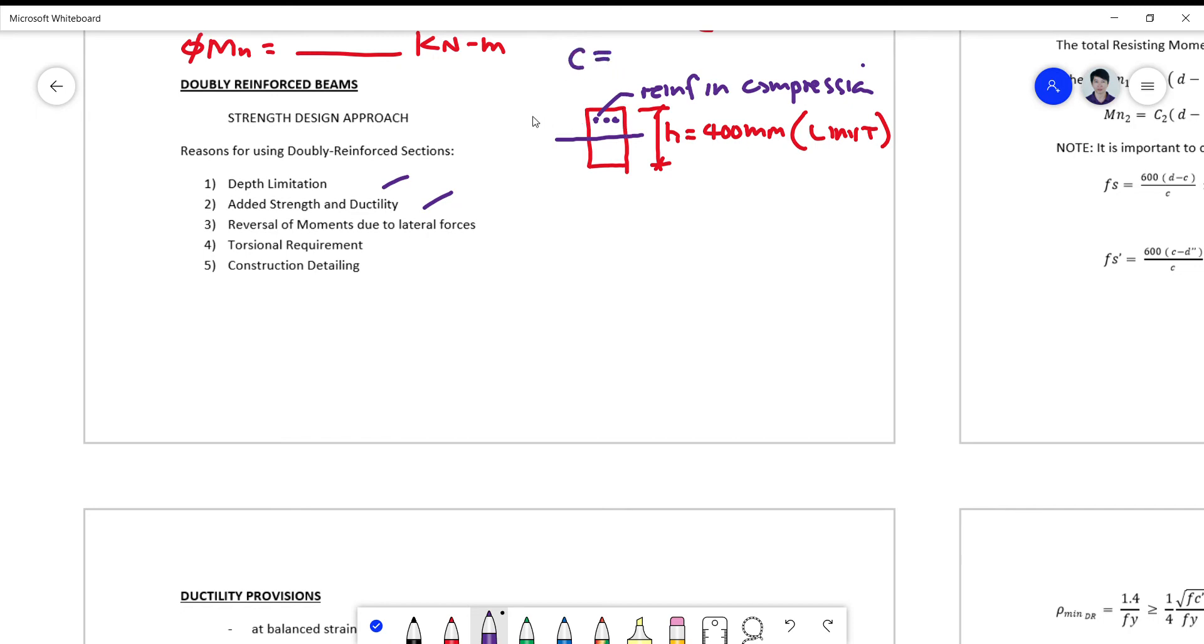Now wherein C1 and C2 are the compression contributions, where C1 is the compression contribution of your concrete